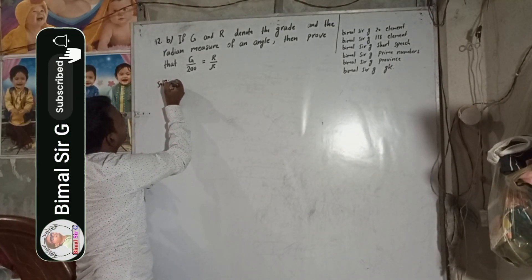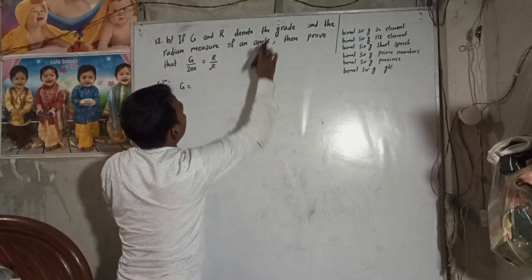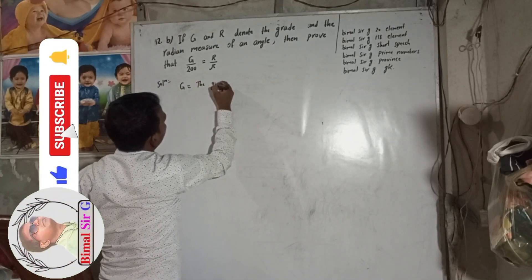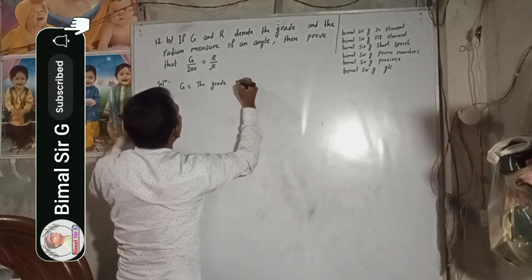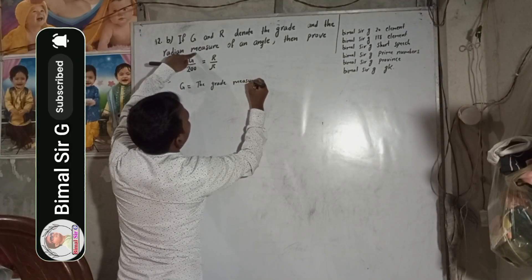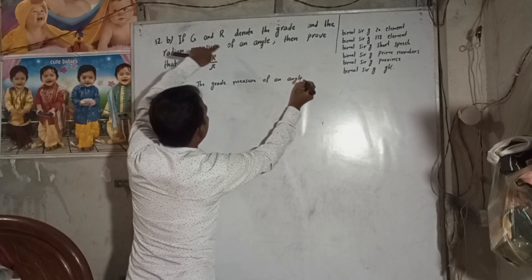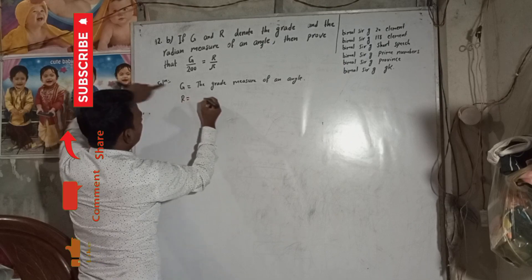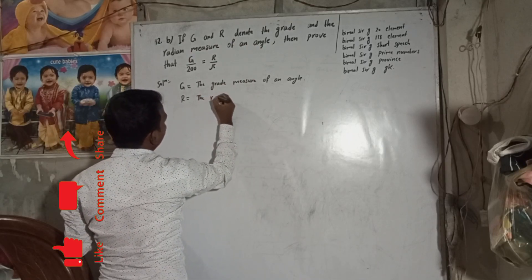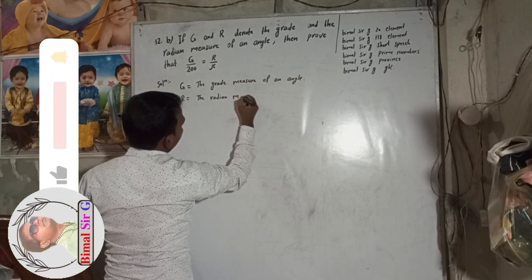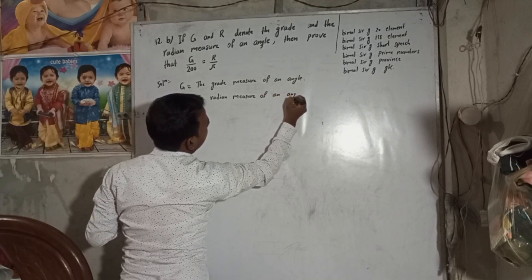Solutions. If G, so here, G denote what? The grade, the grade measure of an angle. And this R denote the radian measure of an angle.